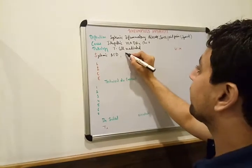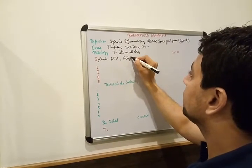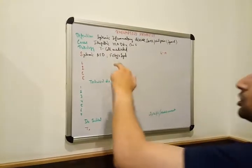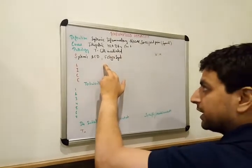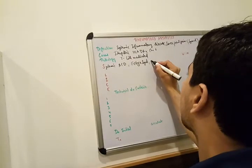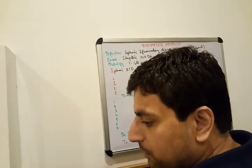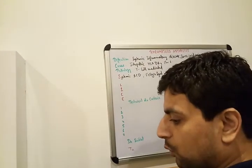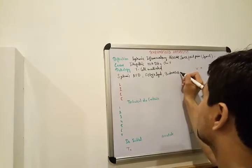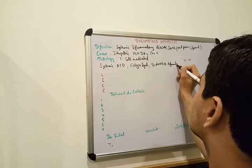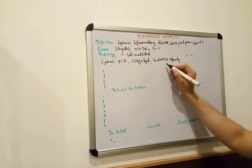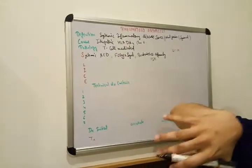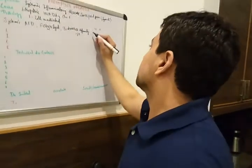We also see Felty's syndrome, which is a triad including neutropenia, Rheumatoid Arthritis, and splenomegaly. Another feature is Boutonniere's deformity, also called swan neck deformity, affecting the proximal interphalangeal (PIP) joints. There is also ulnar deviation of the hands in Rheumatoid Arthritis.